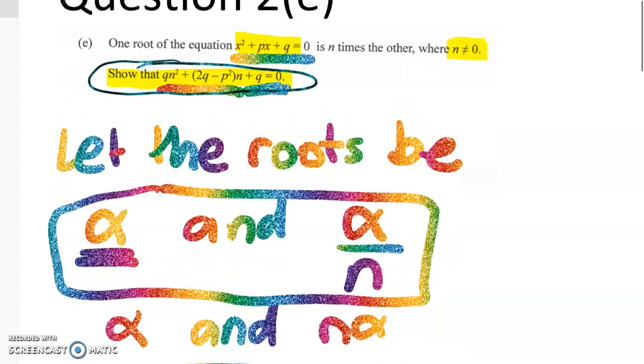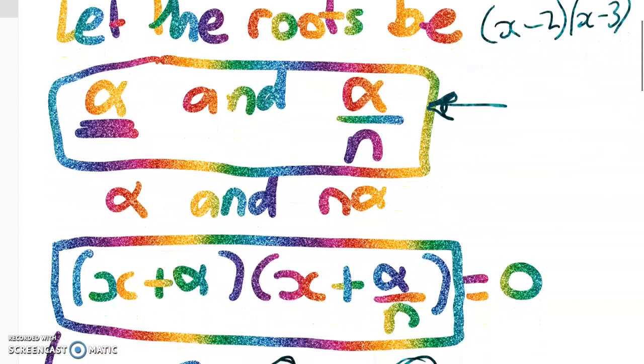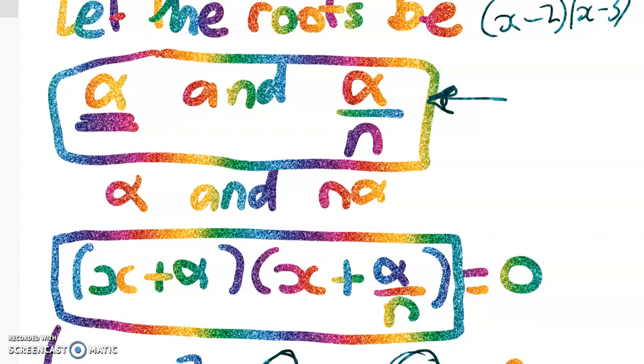So if you go back to that idea that if the roots of something are, say, 2 and 3, then that means that my quadratic looks like this. And it's just that in a harder version where the roots are alpha and alpha over n. I'm sure there are smarter ways to do this question, but that's the way I did it.